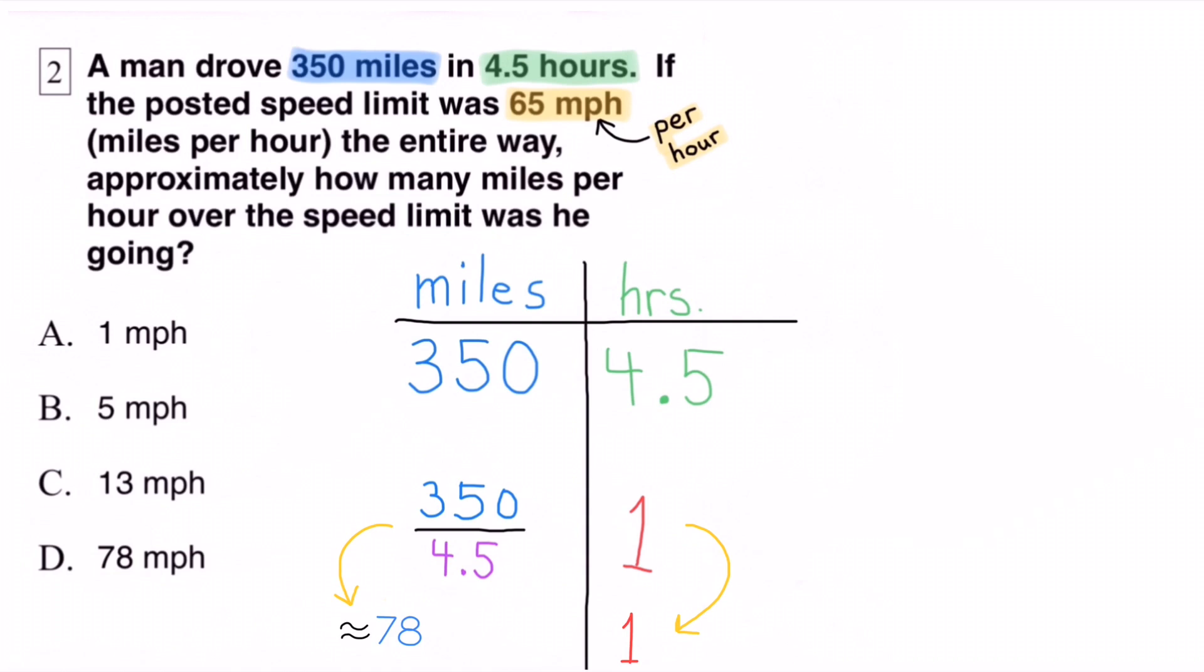So in one hour, he's traveling approximately 78 miles. He's traveling approximately 78 miles per hour. But they're not asking us how many miles per hour he's traveling. They're asking us how many miles per hour over the speed limit he was traveling.